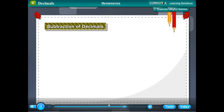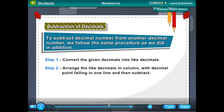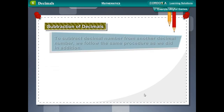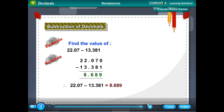Subtraction of decimals. To subtract one decimal from another, follow the same procedure as addition. Step 1: Convert the given decimals into like decimals. Step 2: Arrange the like decimals in columns with the decimal points in one line, then subtract. Example: 22.07 − 13.381 = 8.689.